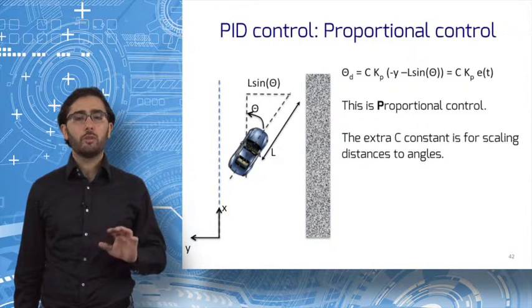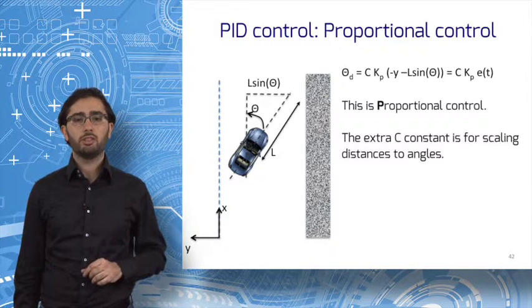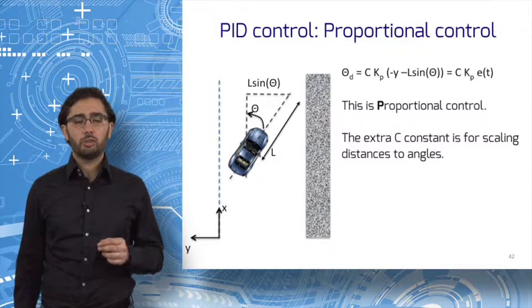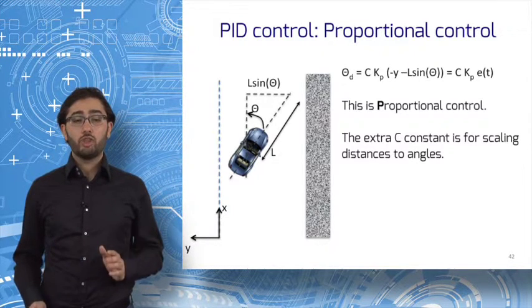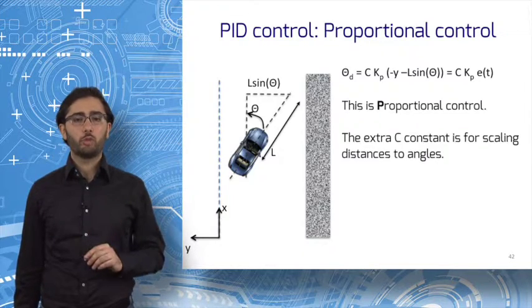We further multiply by a constant c to scale the distances on the right side of the equality to angles on the left side. The beauty of PID control is its simplicity and correspondence to intuition. Its challenge is to choose the gains, in this case, kp for proportional control.